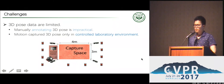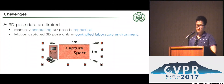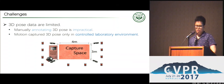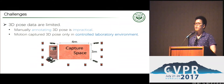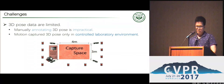Another challenge for this task is the limited 3D pose data, which greatly restricts deep learning-based algorithms. The main reason comes from two aspects. On the one hand, annotating 3D pose from RGB images is impractical because of the 2D to 3D ambiguity. On the other hand, 3D pose data can be captured by 3D motion capture systems, but only in controlled environments. For example, the largest publicly available dataset, the Human 3.6M dataset, is only captured in a 4m x 3m area.